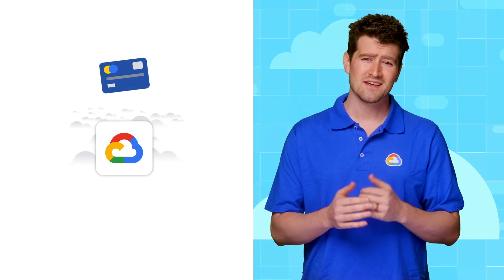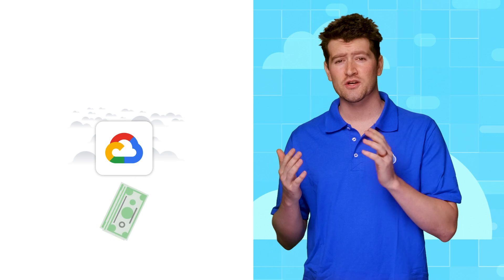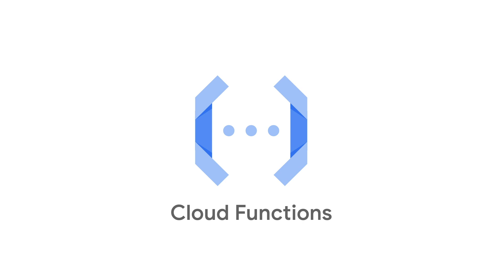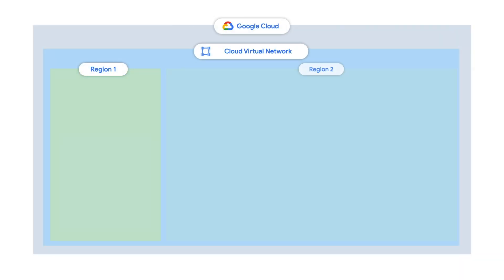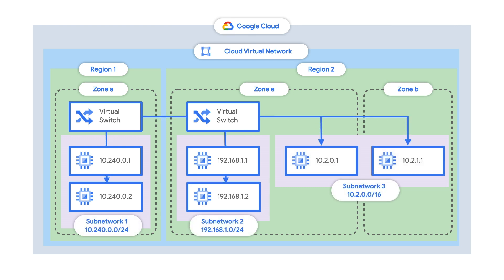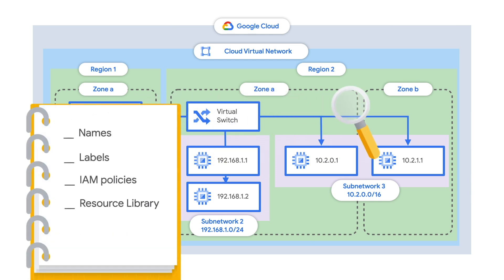Speaking of cost, cloud billing helps you control, assess, and analyze cost. It allows you to attribute spending on a particular project or workload to the correct cost center. You can also set up alerts for your spending budget. For example, you could use cloud functions to enforce and monitor a compliance-as-code solution to verify names and labels on provisioned resources, and inspect your own IAM policies and resource hierarchy to ensure the standards are being followed.